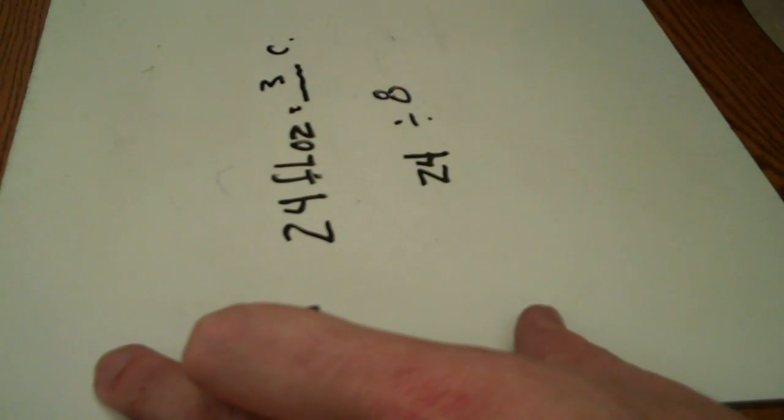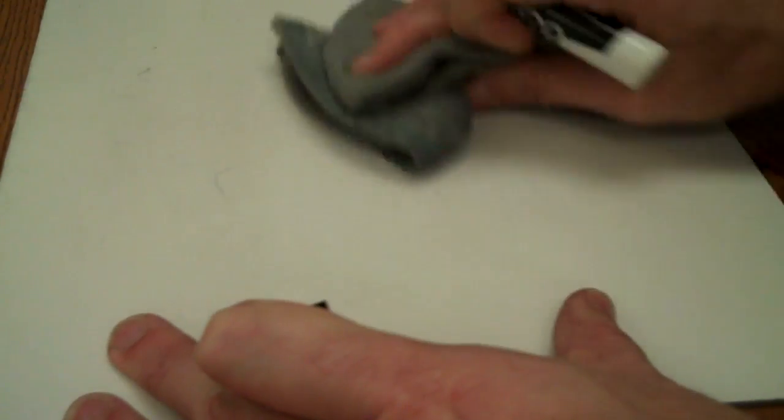So, that's an example of one doing multiplication, one doing division.